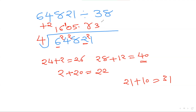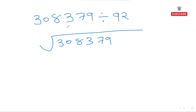With 21: add 5×2=10, so 21+10=31. That's my remainder — 31. Now the carried 1 gets added to the 6 in the quotient, making it 7. So the final answer for 64821 ÷ 38 is 1705 remainder 31.